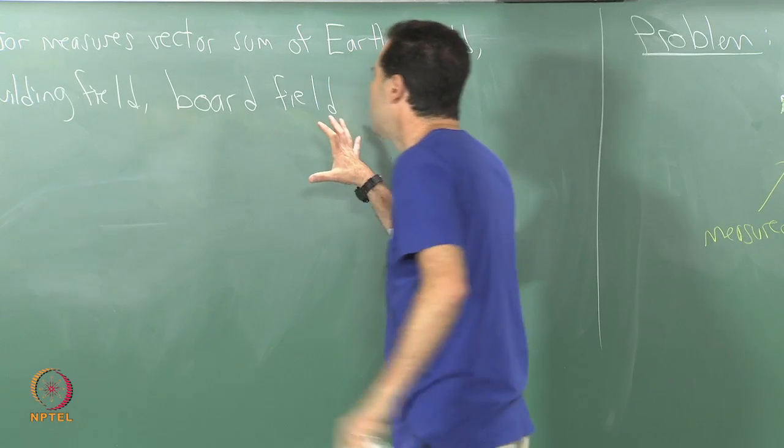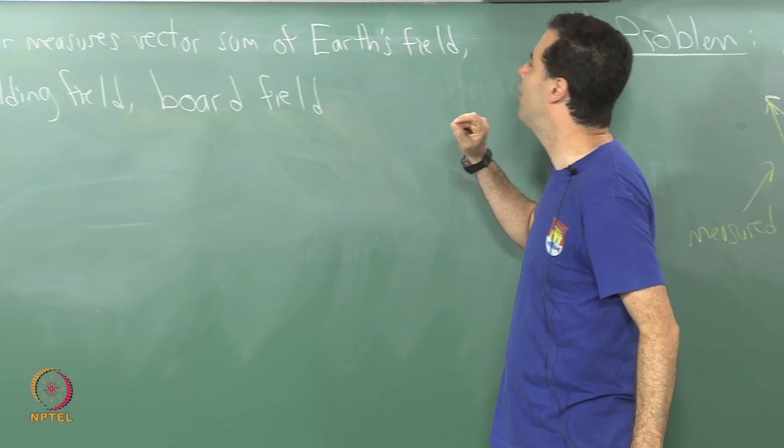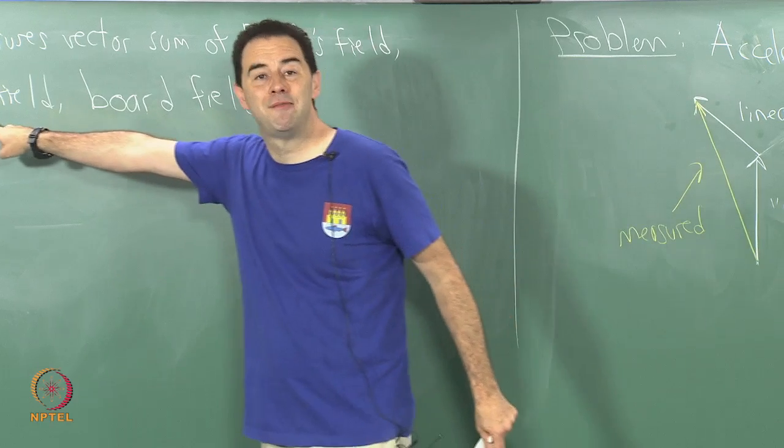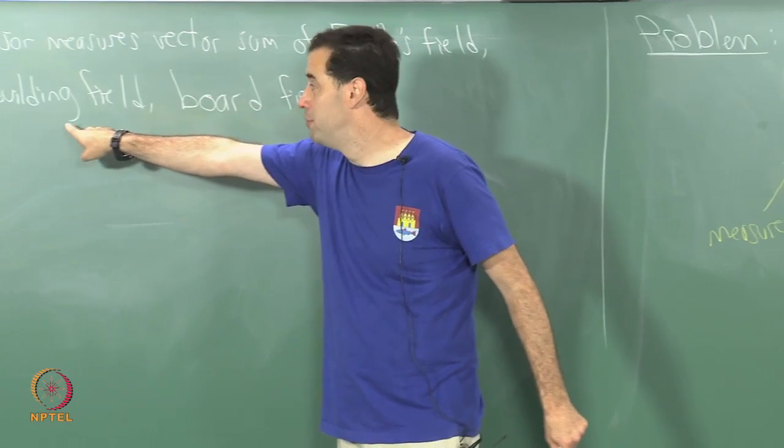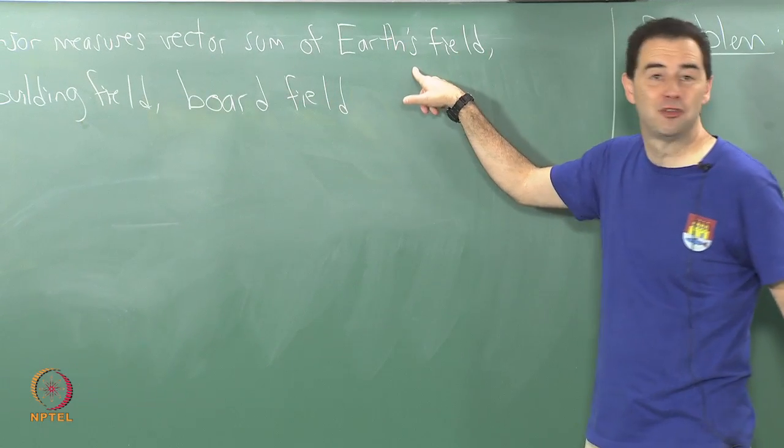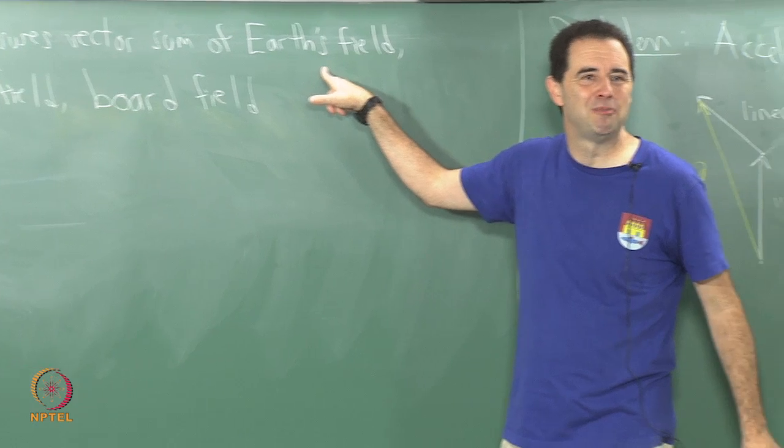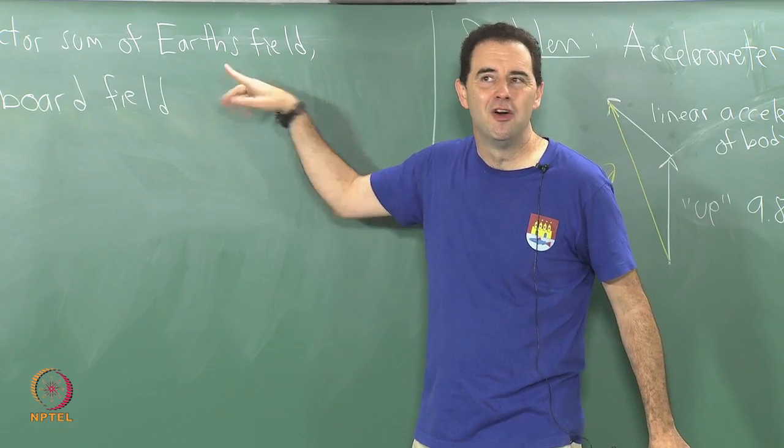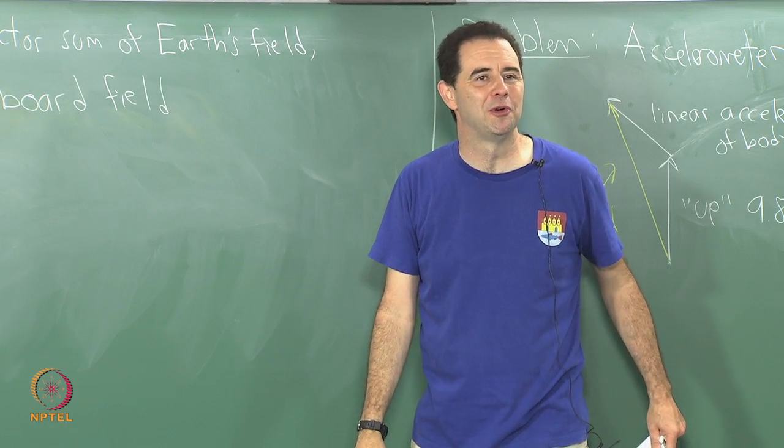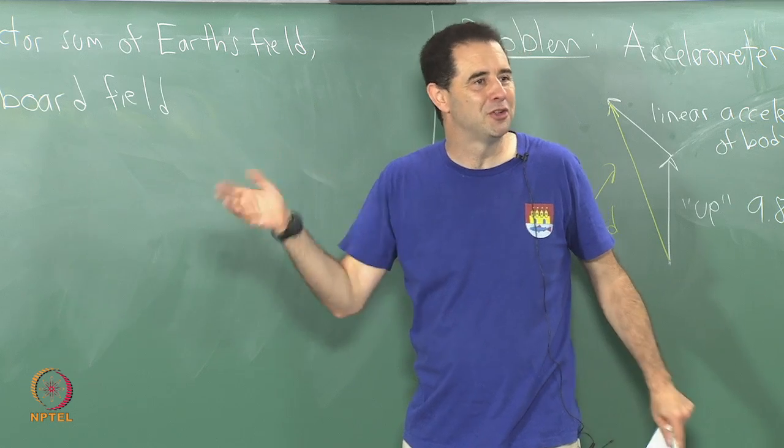Those are three main fields. What is very interesting is that you could get so unfortunate that when you are inside of the building in some location, the building's field might cancel off the earth's field. The two vectors may be in nearly opposite directions and you get a horizontal component that is very close to zero, in which case it is useless. So these are some frustrations with dealing with magnetometers.